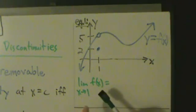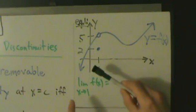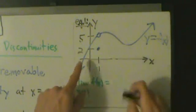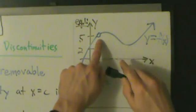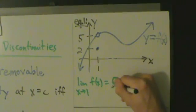Remember, limit describes how it looks like the function is behaving. So as x approaches 1 from the left or from the right, it looks like the y values are going to 5, right? So this limit is 5.